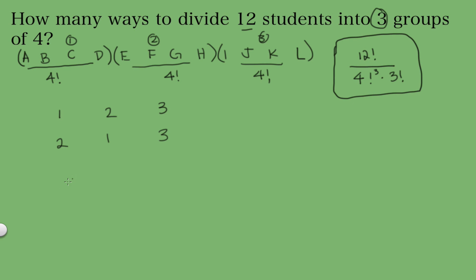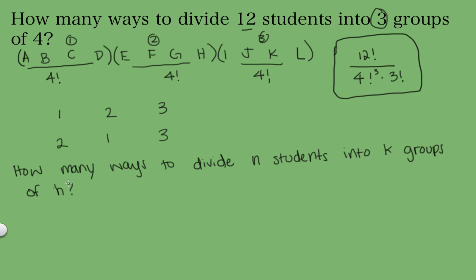This gives us our final solution. You can see a general formula here: if asked how many ways can we divide n students into k groups each of h students, you take n factorial — all the permutations of n students — divide by h factorial to the power k, since each group of h students has h factorial permutations, and then divide by k factorial because we don't care about the order in which the groups come. This is our general solution.